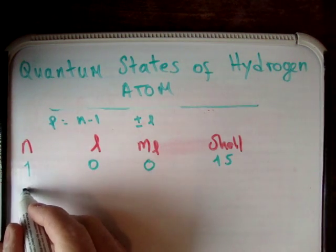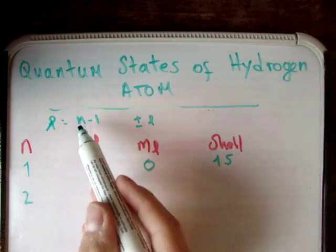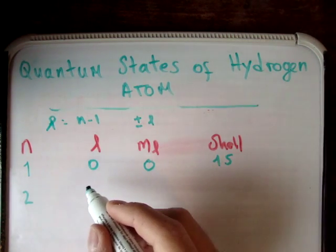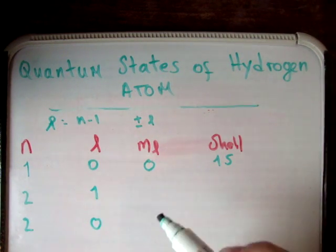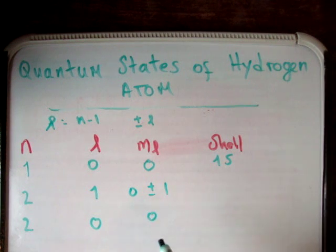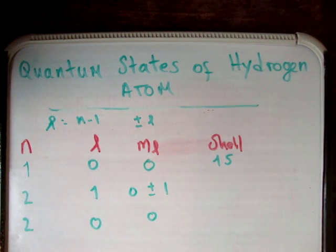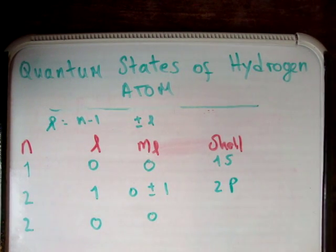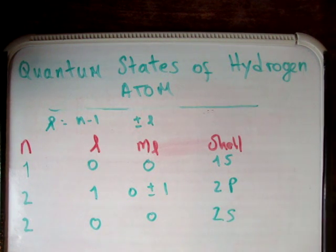When N equals 2, the maximum value of L is 2 minus 1, which is 1. So L can be either 1 or 0. When L equals 1, M sub L can be 0 or plus or minus 1 — this corresponds to a P shell, giving us the 2P shell. When L equals 0, M sub L is 0, corresponding to an S shell — giving us the 2S shell.